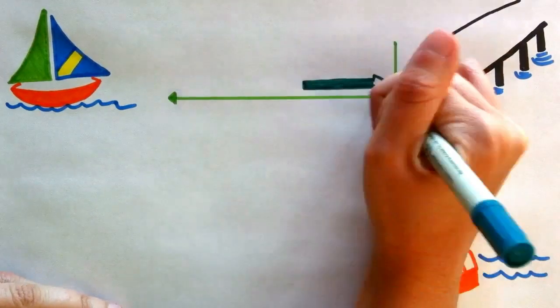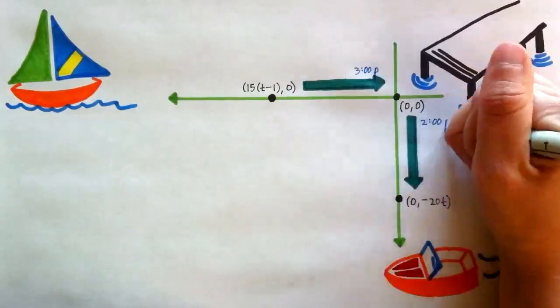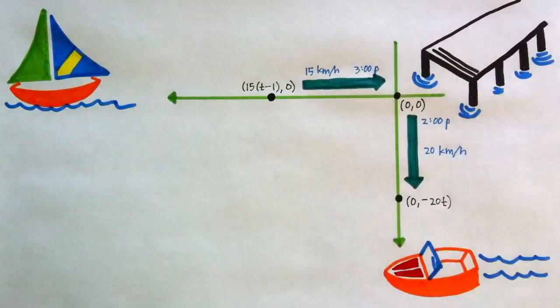The other boat is heading east toward the dock at 15 kilometers per hour. Since it doesn't reach the dock until 3, and we're treating 2 as time 0, the position of this boat at any time before 3 can be described as the coordinate point (15(t - 1), 0).